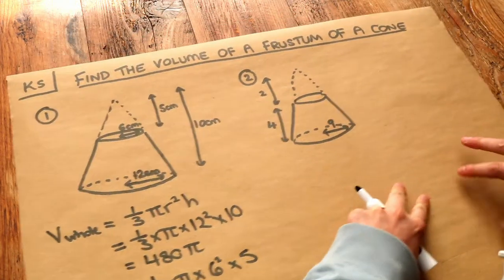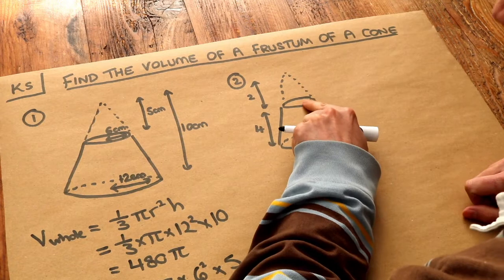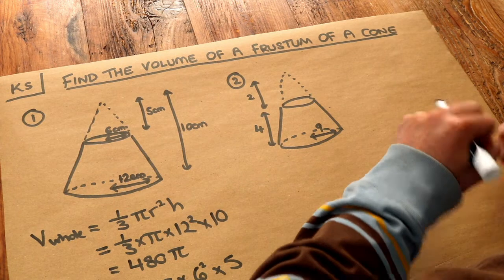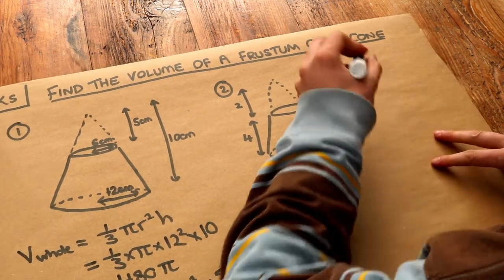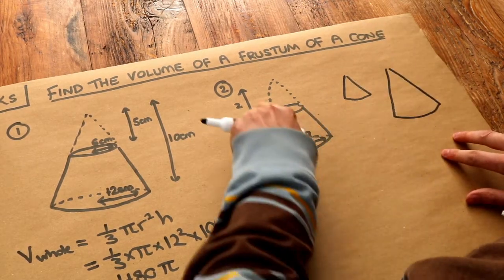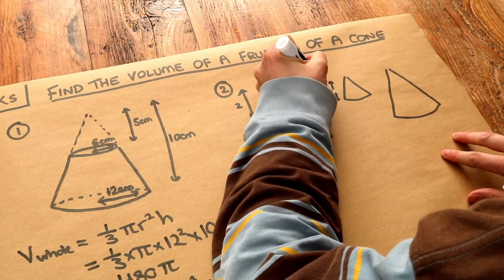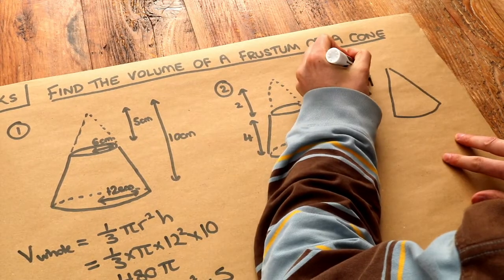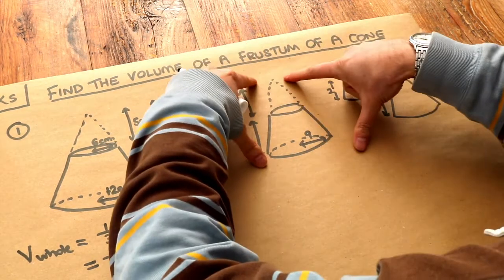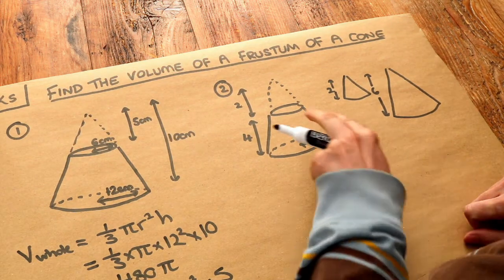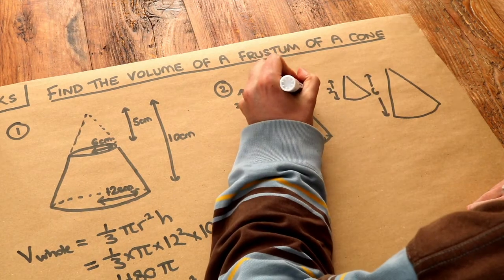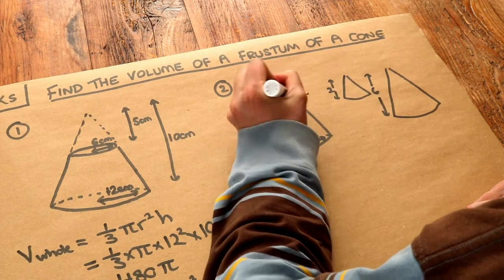Now the second one is harder because we're not given the radius of this top cone. And to do that, we just have to use the idea of similar shapes. If we compare the top cone to the big cone, the height of the top cone is 2. The height of the big cone is 6. So you can see all the lengths in the cone from the small one to the big one are becoming 3 times as big. So that means the radius will also become 3 times as big. And that means this radius here is going to be 3.